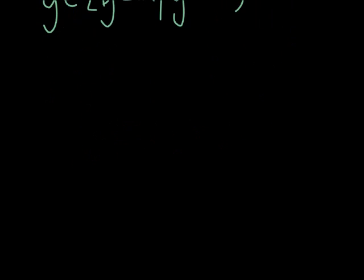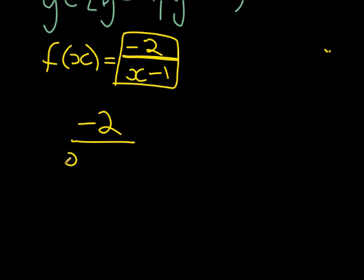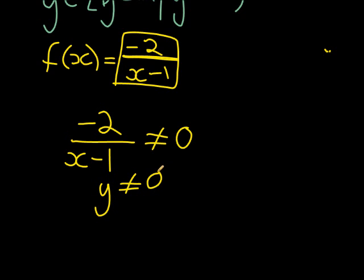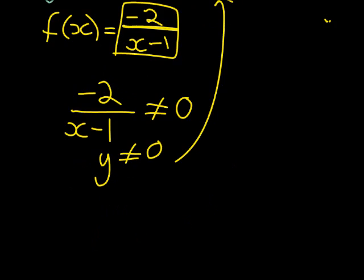Let's look at another example. f(x) = 2/(x − 1). Remember what we said: the fraction cannot be equal to zero. This is the fraction, so the fraction may not equal zero. That is the fraction I use to get y, meaning y may not be equal to zero. It's exactly the same result as the previous example.